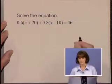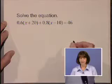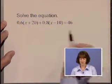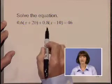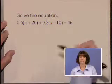Now this equation has some decimals in it, and let's get rid of those decimals right off the bat by multiplying everything on both sides by 10. If we multiply 0.6 and 0.8 by 10, that will move those decimal points over one place.